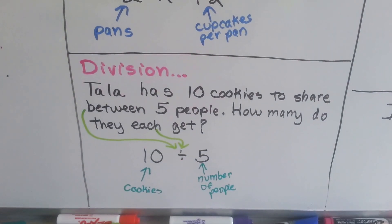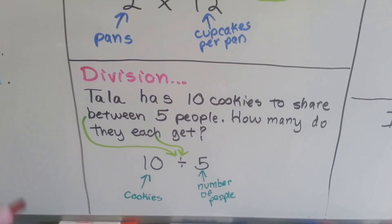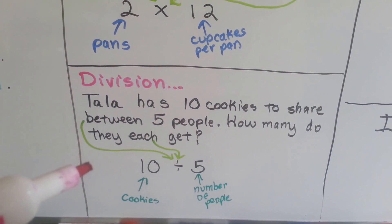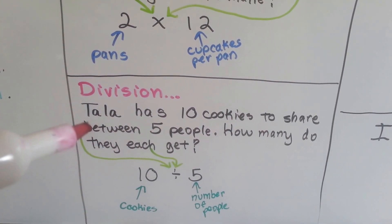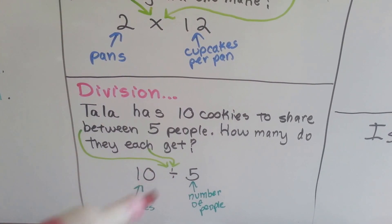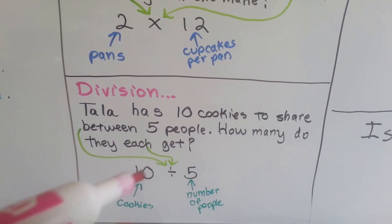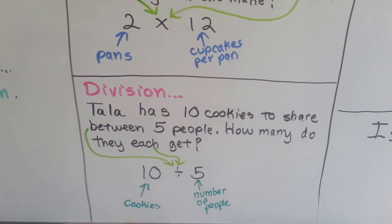We can tell a division numerical expression story. Tala has 10 cookies to share between 5 people. How many do they each get? So sharing between and each tells us it's division. This is how many cookies she had and that's the number of people.